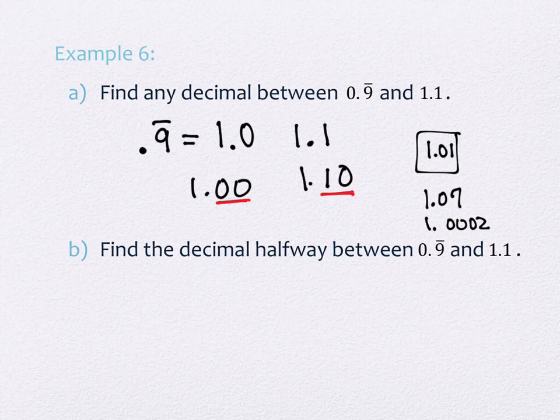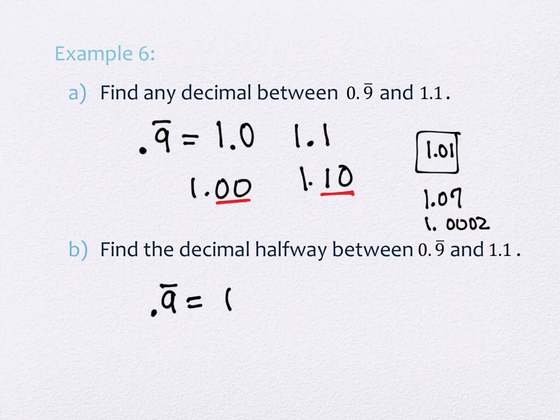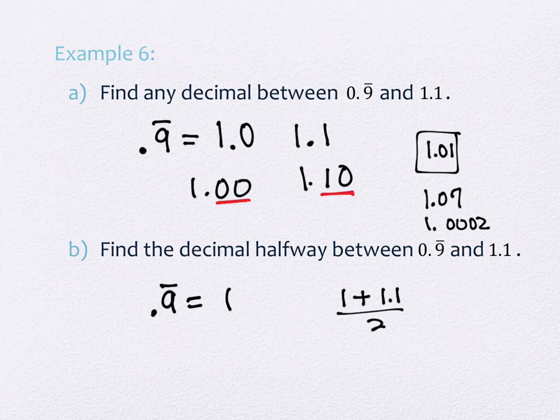Now, if you're wanting to find the decimal halfway between, that's a trickier question. What I'm going to do is I'm going to add the two numbers together and divide by 2. It's a midpoint formula, or it's an averaging process. You guys do it with your grades all the time. If you added all your homeworks together and divide it by the total number of homework scores, that would be the average of your homework scores. So if I add these two numbers together and divide by 2, this will give me the halfway point. What is the halfway point between 1 and 1.1? 1.05.